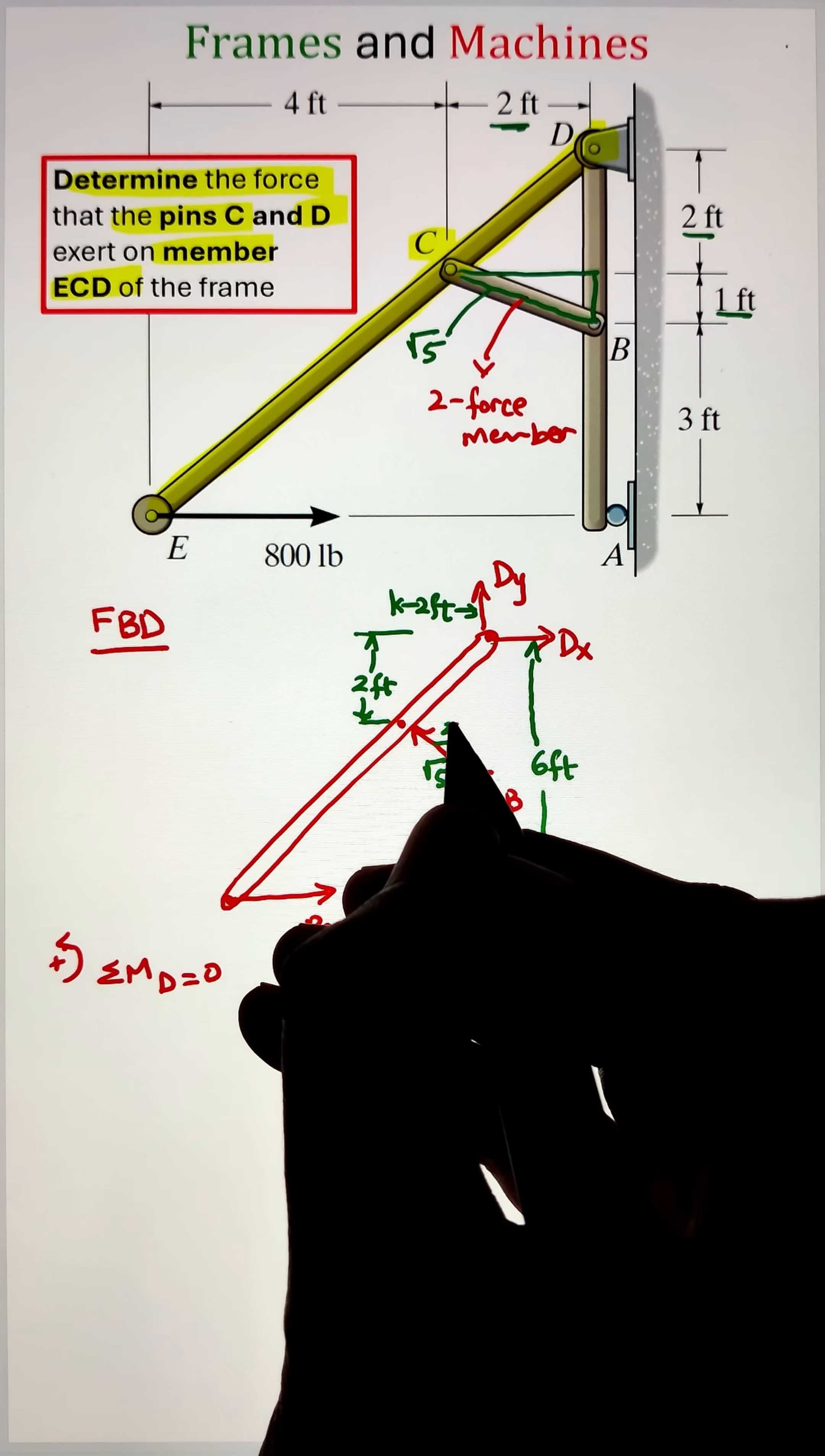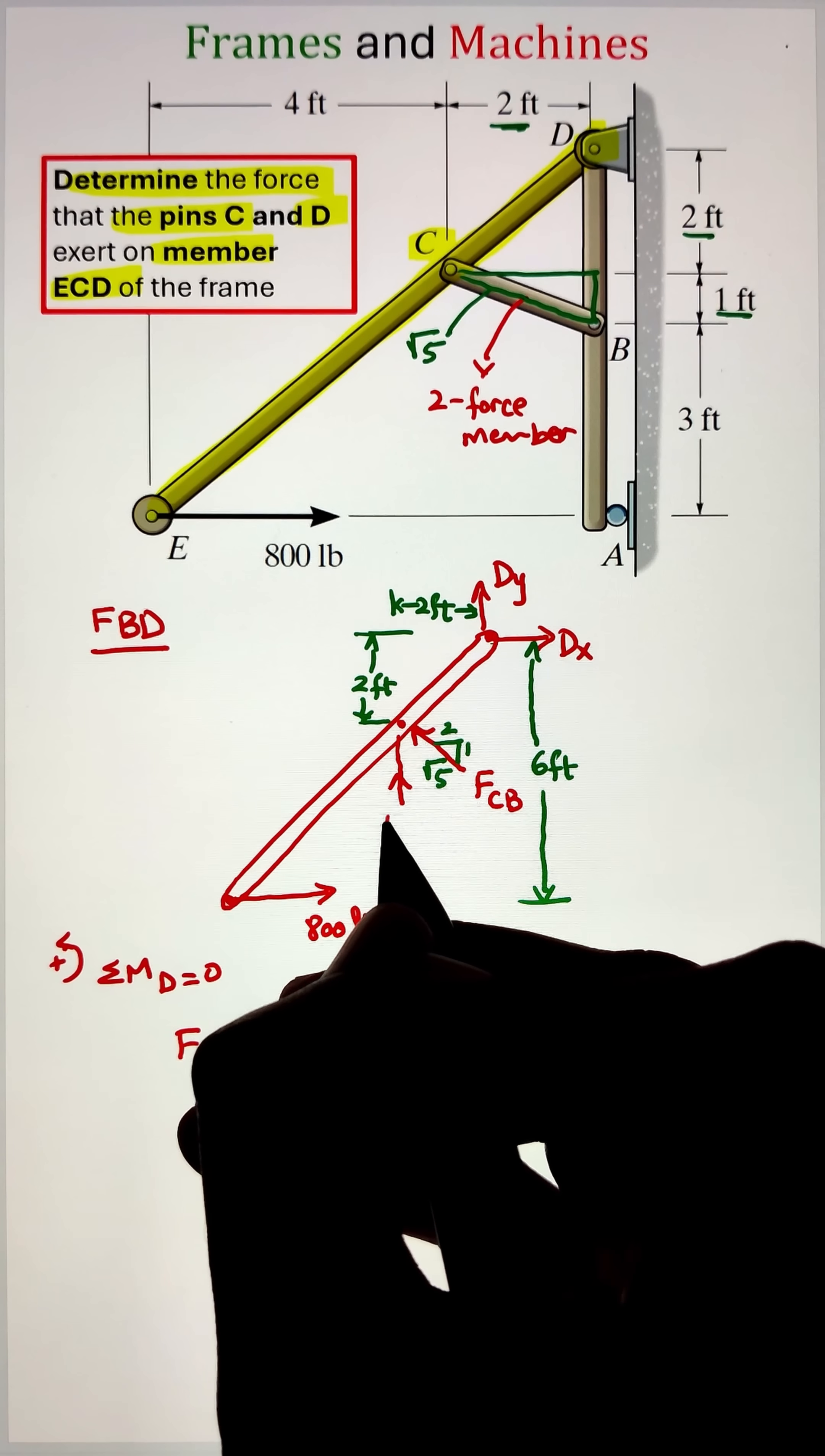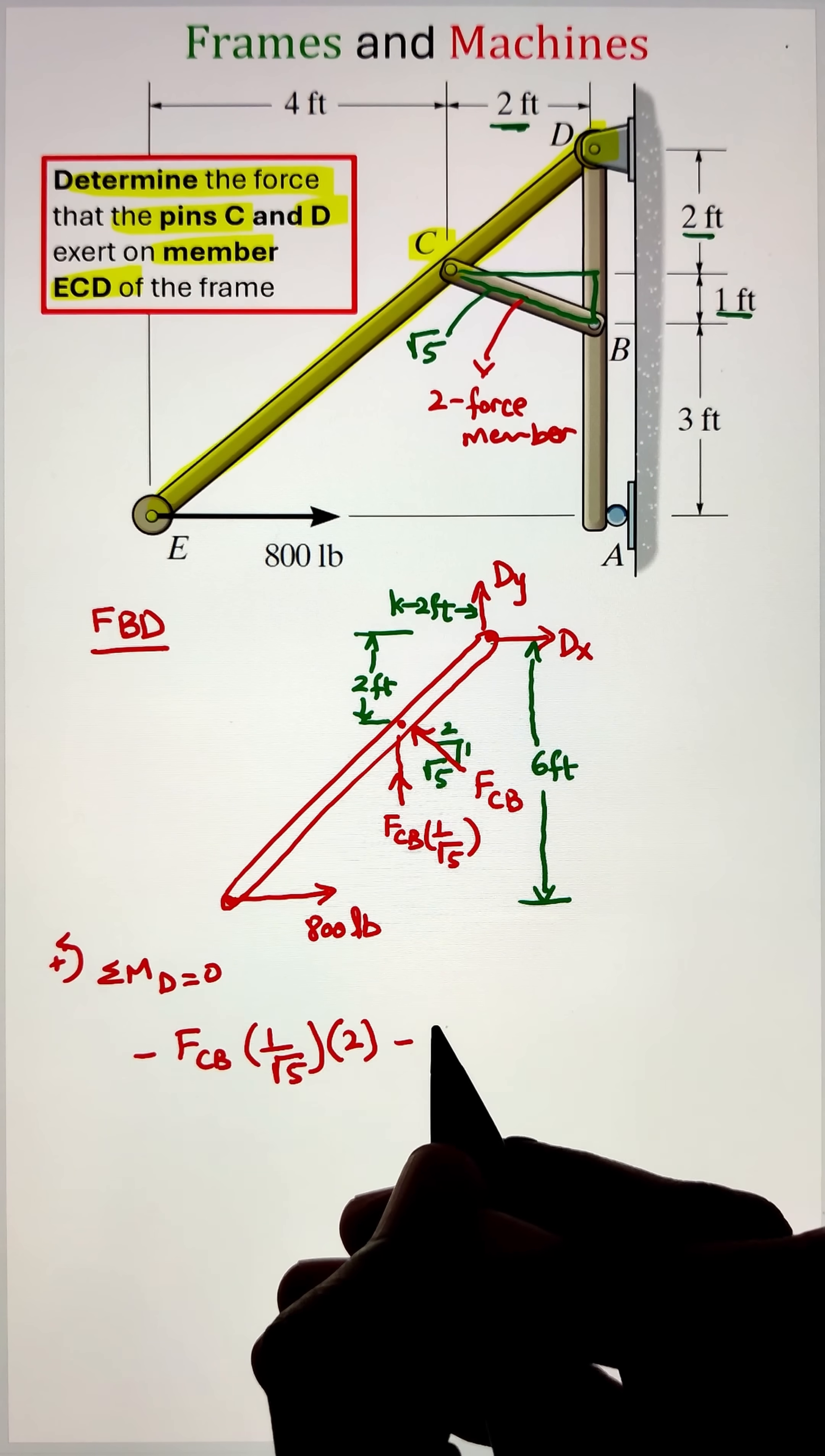To start, we can apply our summation of moment at point D equals to zero. This will eliminate both Dx and Dy as they are not going to create any moment. Next, the force FCB can be divided into vertical and horizontal components, and we can identify the moment these forces create with respect to point D.